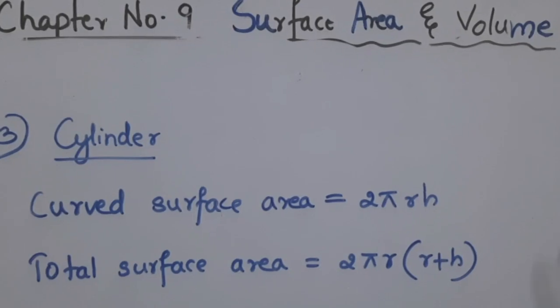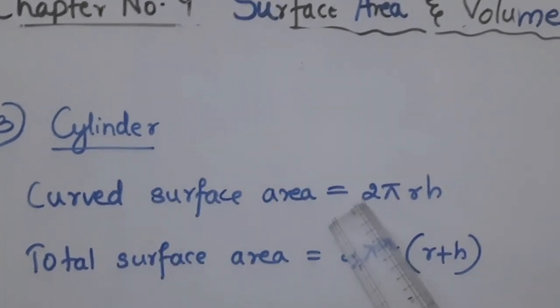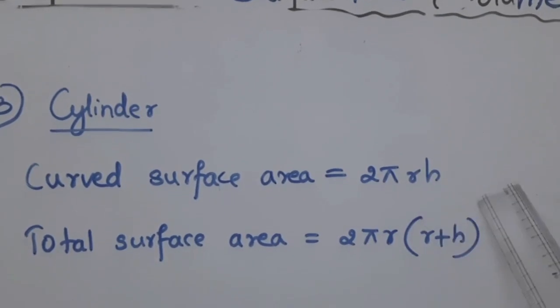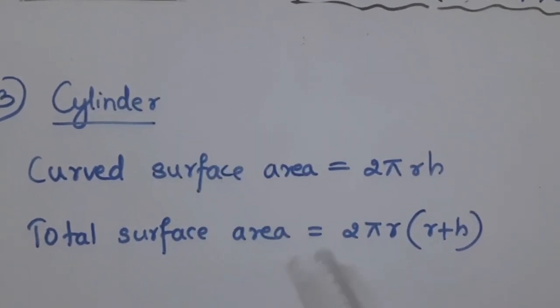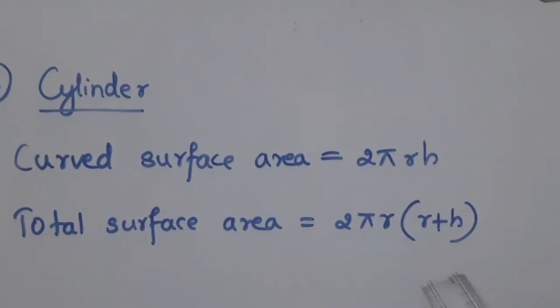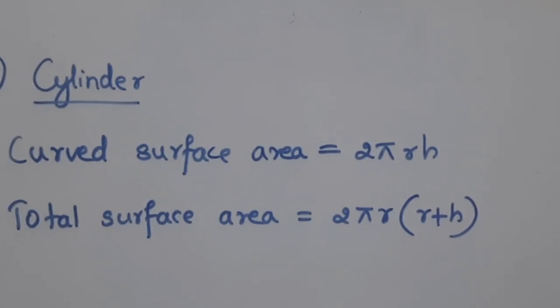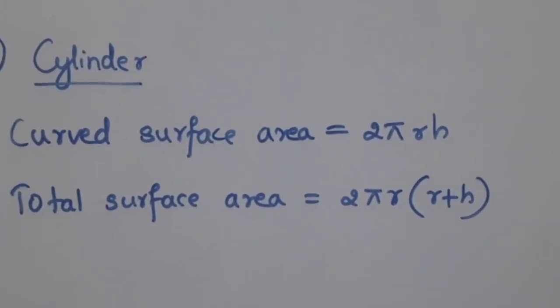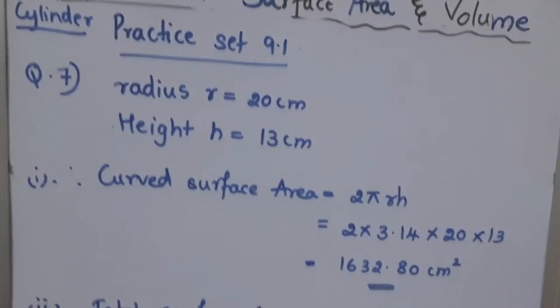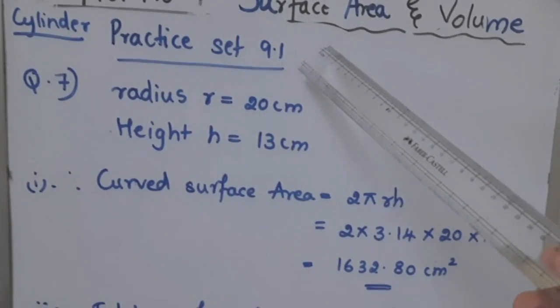Curved surface area of Cylinder is equal to 2πRH. Total surface area of Cylinder is equal to 2πR into R plus H. Here value of π is 3.14, R is radius, H is height. Let us solve a question related to Cylinder.